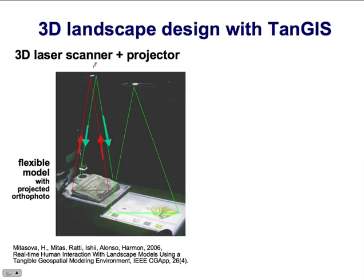This is how the system works. The scanner scans the three-dimensional model, and the information goes through the scanner into the GIS. The digital elevation model is computed and then the results of topographic analysis are projected over the digital elevation model. We can also project other geospatial data over the three-dimensional model, such as an orthophoto. If it is hooked with an additional projector, we can project additional data as well.